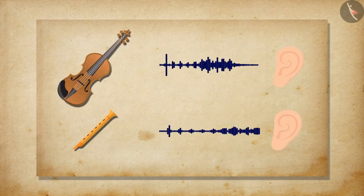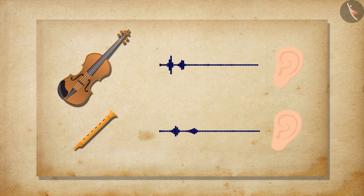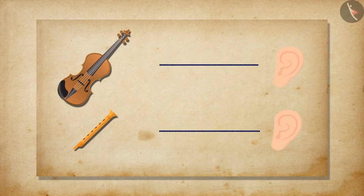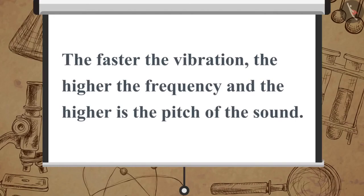The way the frequency of a sound is interpreted by the brain is called its pitch. The faster the vibration, the higher the frequency, and the higher is the pitch of the sound.